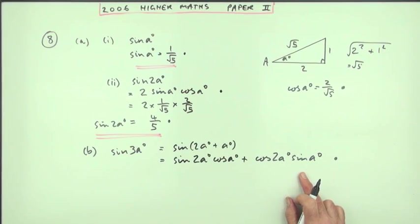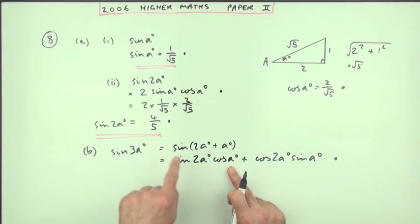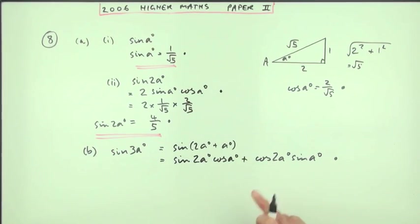Now to evaluate it how many of these do I know? I know sine A. I know cos A. I know sine two A. There it's there. But I need to figure out cos two A.